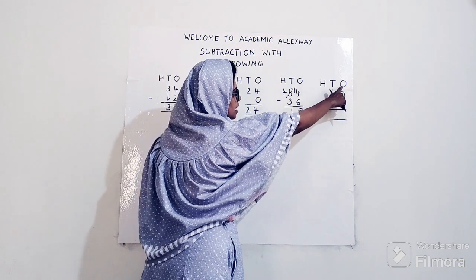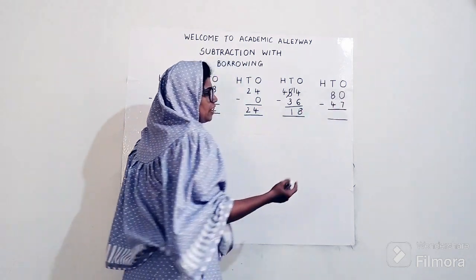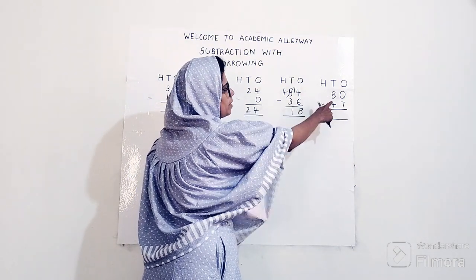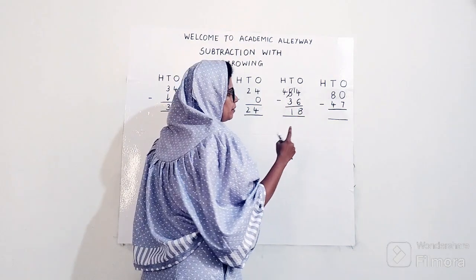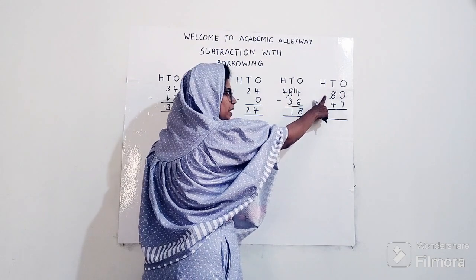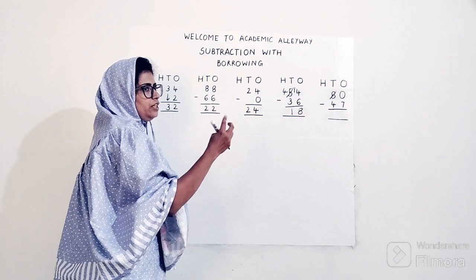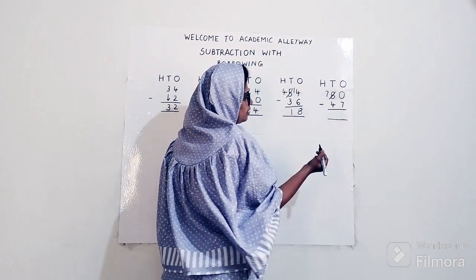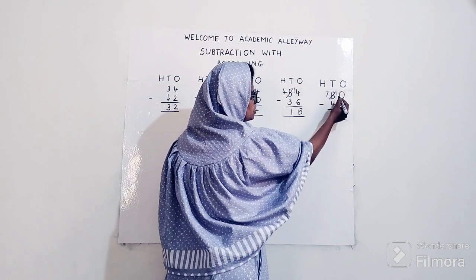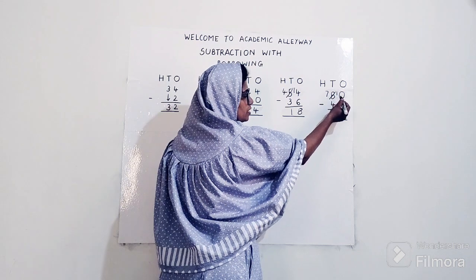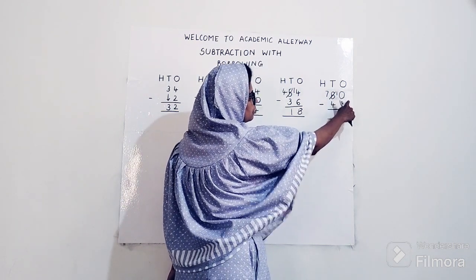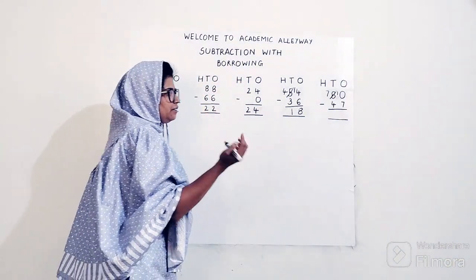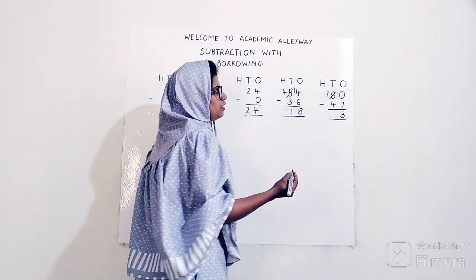Let's do one more example. Write HTO. The example is 80 minus 47. Starting with ones: 0 minus 7. I have 0 chocolates and somebody is asking for 7 — I have to borrow from the next number. My next number is 8, so I take one from 8. Subtract 1 from 8 — count after 1 till 8: 2, 3, 4, 5, 6, 7, 8 — so 7 remains. That one goes to the ones place, making it 10. Now subtract 7 from 10 — count after 7 till 10: 8, 9, 10 — answer is 3.